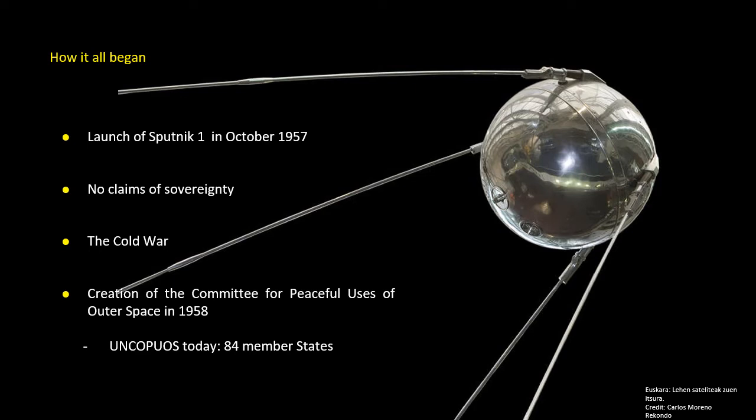The committee addressed specialized agencies and other international bodies relating to the peaceful uses of outer space and legal problems which might arise in programs to explore outer space. Originally consisting of 24 member states, it now consists of 84 member states — one of the largest United Nations committees.